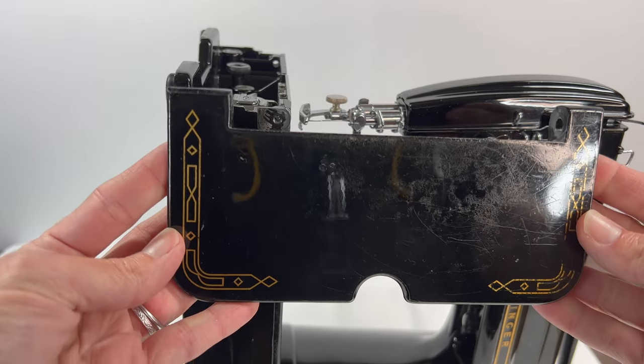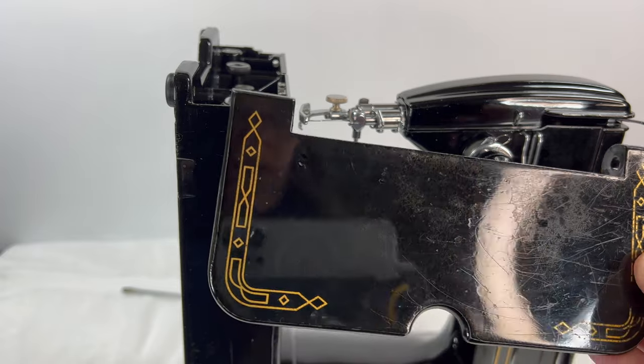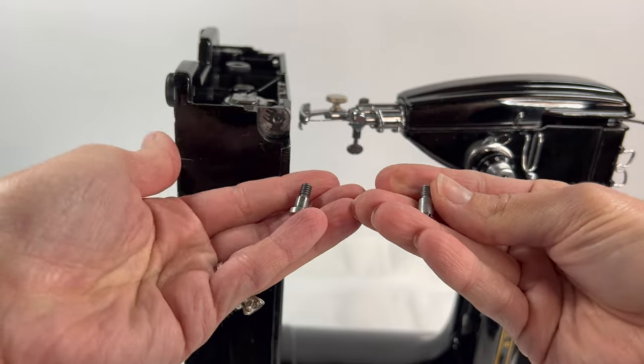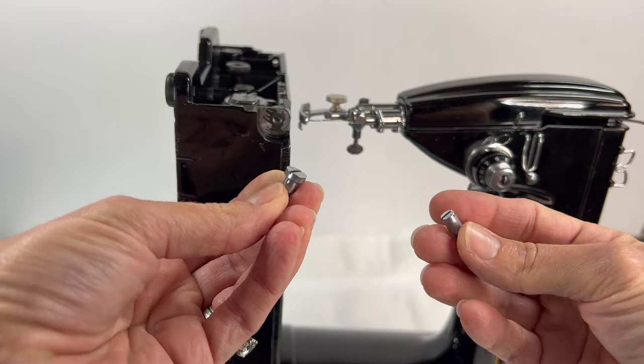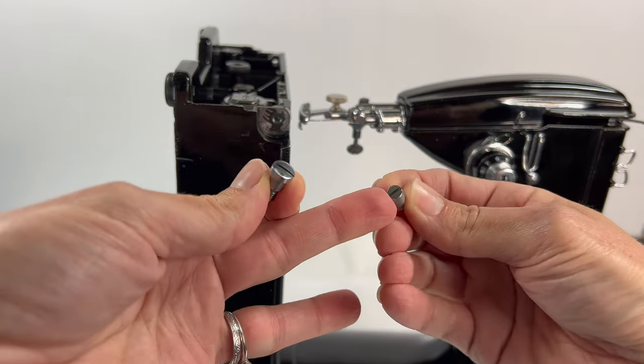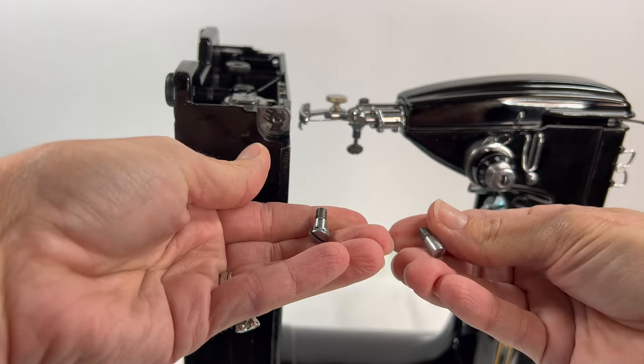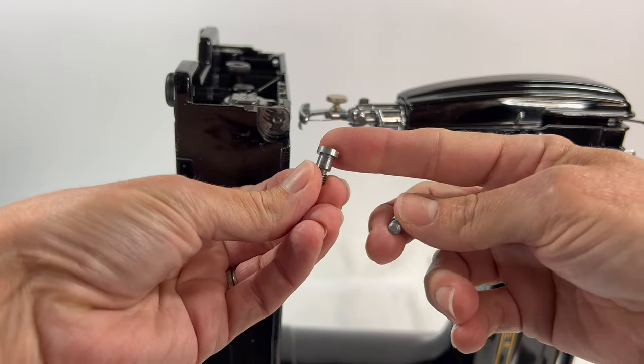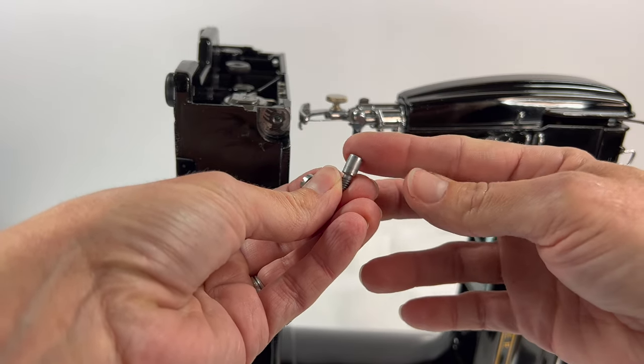or to just reinstall the bed extension and hopefully tighten it up, you need the bed extension itself. You also will need the screws that hold the bed extension on. When you took it off, you will notice there are two screws and they are not the same. One screw has a standard screw head and the other screw is this funny little flat all the way to the end screw.